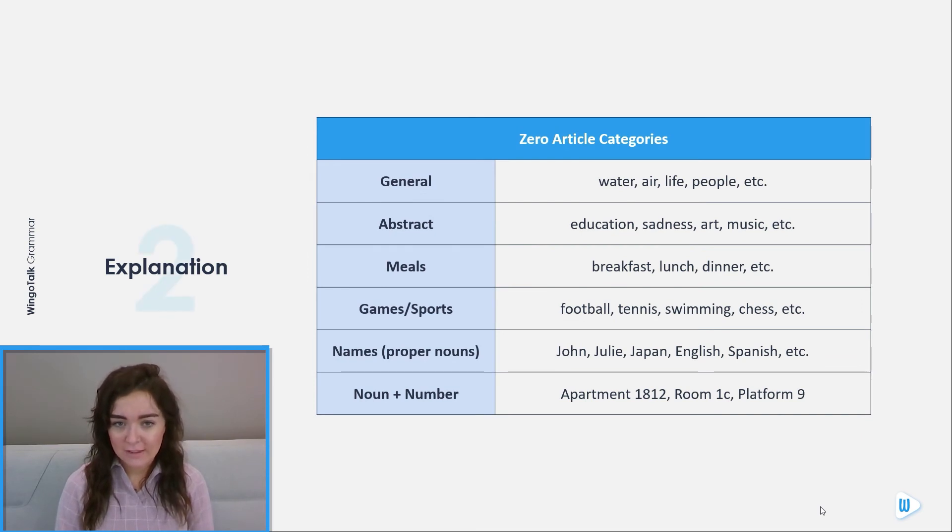Zero article categories. General: water, air, life, people. Abstract: education, sadness, art, music. Meals: breakfast, lunch, dinner. Games or sports: football, tennis, swimming, chess.